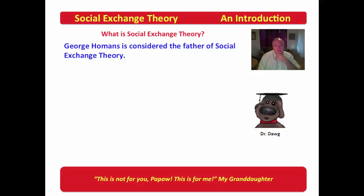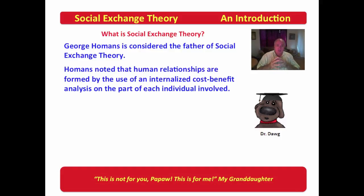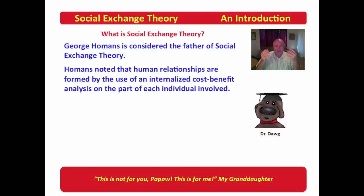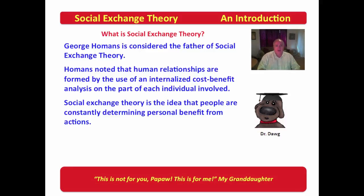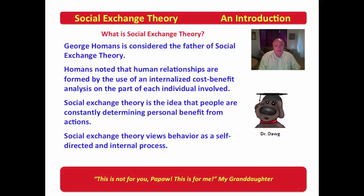George Homan is considered the father of social exchange theory. Homan noted that human relationships are formed by the use of an internalized cost-benefit analysis on the part of each individual involved. I want you to notice that we said 'internalized' — it's inside the person. The person is making the decision as to the cost or benefit of a particular behavior. Social exchange theory views behavior as a self-directed and internal process, in contrast to behaviorists who believe it is driven from external things.